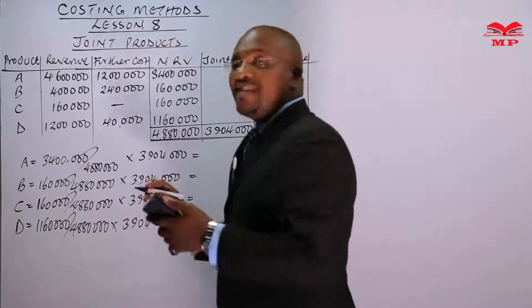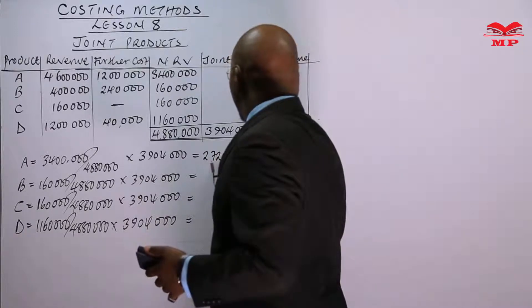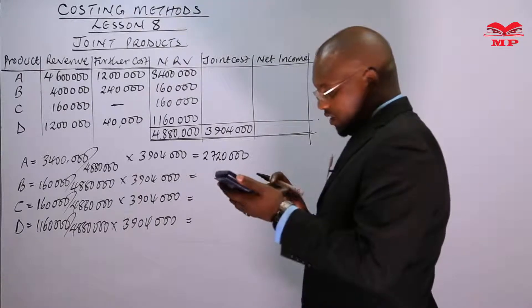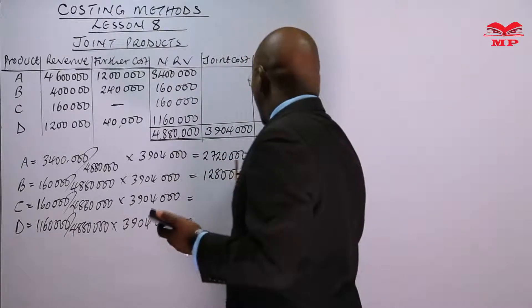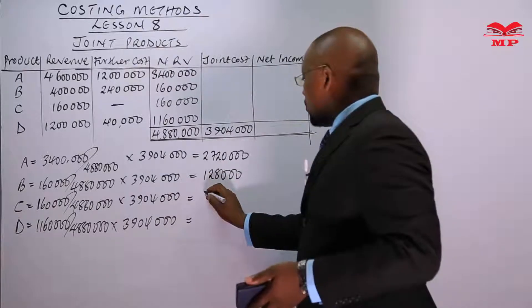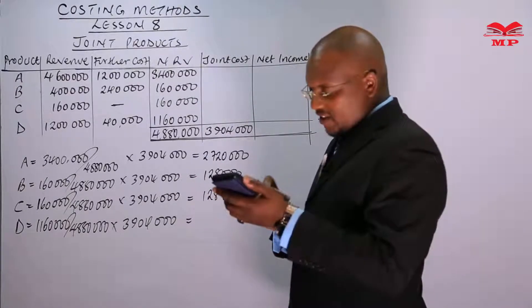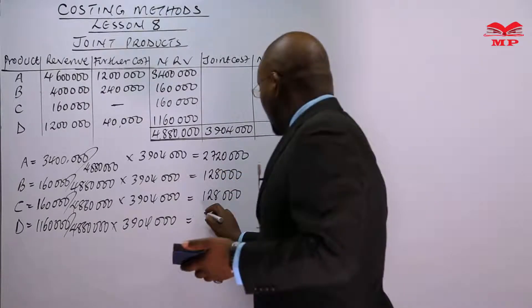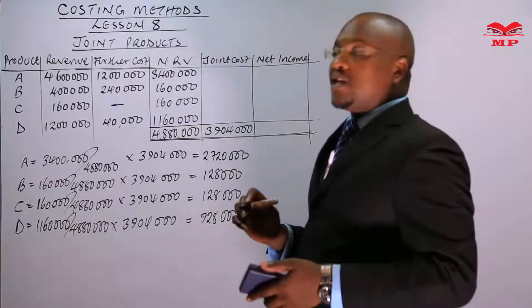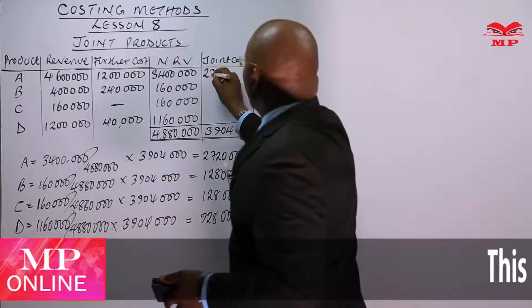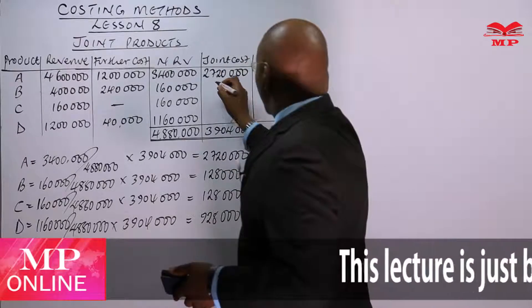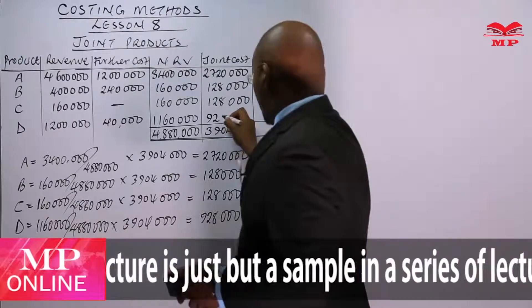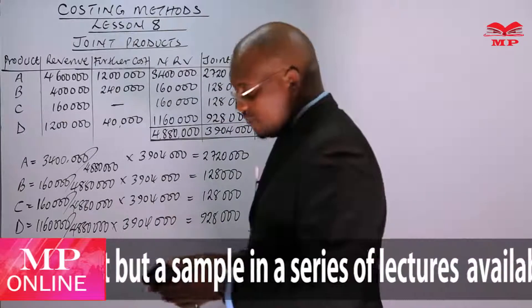The joint cost allocated to product A comes to 2,720,000. Product B: 160,000 divided by 4,880,000 multiplied by 3,904,000 equals 128,000. Product C is also 128,000. Then product D: 1,160,000 divided by 4,880,000 times 3,904,000 equals 928,000. So transferring to the joint cost column: 2,720,000 for A, 128,000 for B, 128,000 for C, and 928,000 for D. That is how we share the costs.